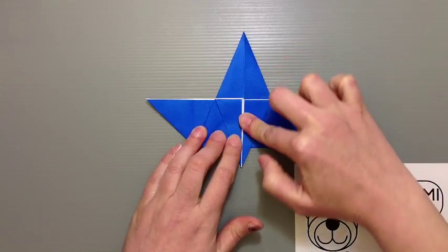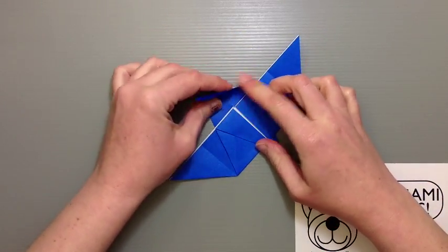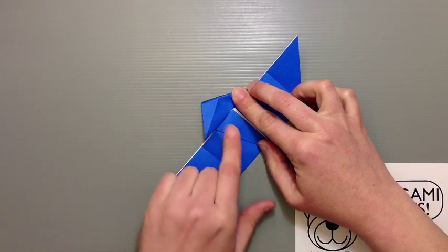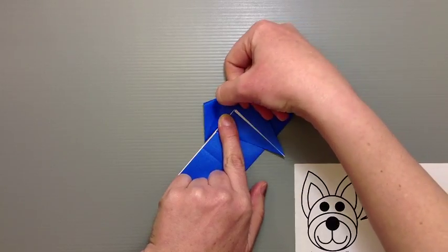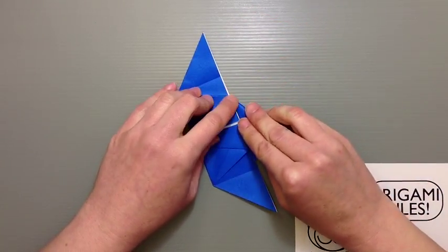And then we're going to do kind of a rabbit ear fold here. And to do that, what you do is you take the outer edge and just fold over. But we don't want to crease the whole thing. You just want to come up to this crease that you see here in the middle. Fold it over. And do the same thing on this side too.